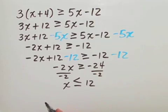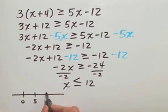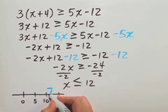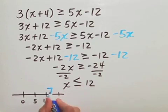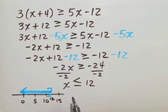Now, our solution, we're asked to graph the solution on a number line. So we have 0, 5, 10, 15. We have 12. We want numbers that are less than or equal to 12. So we use a bracket and an arrow to the left to indicate numbers less than or equal to 12.